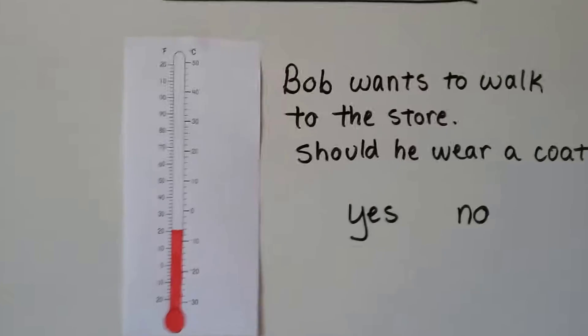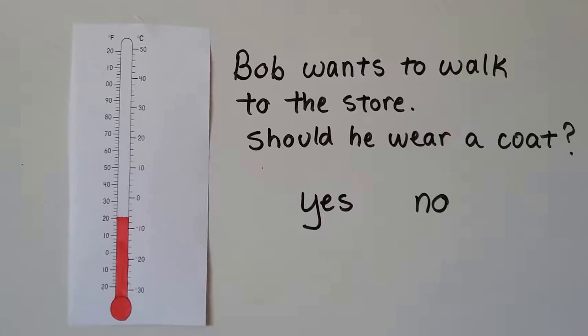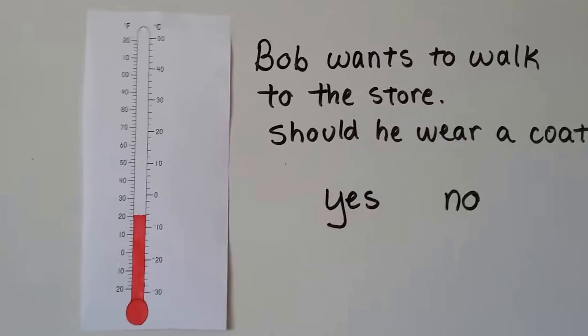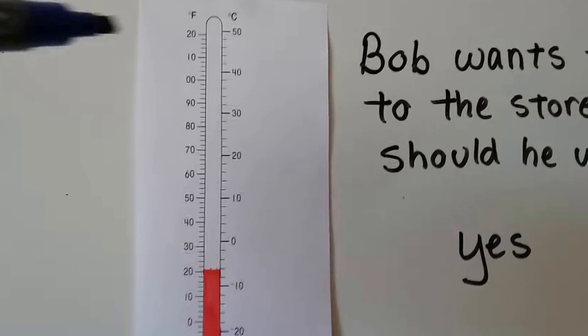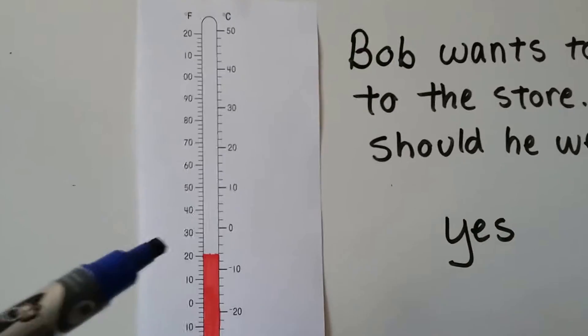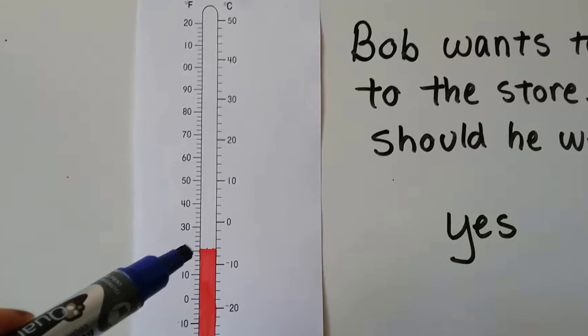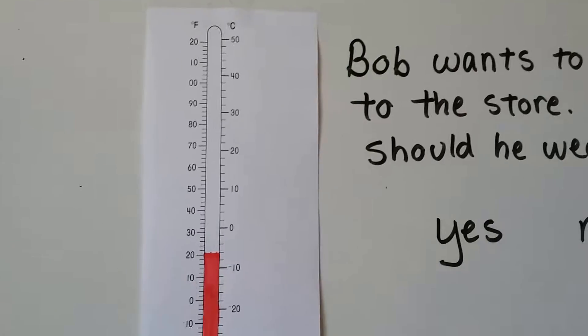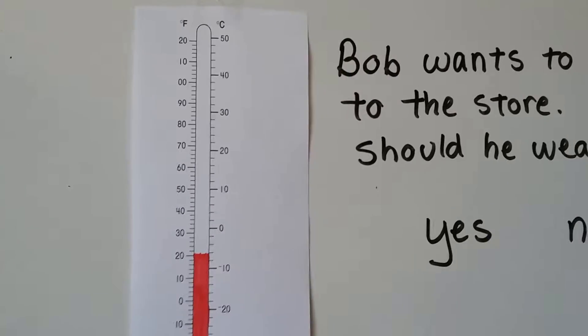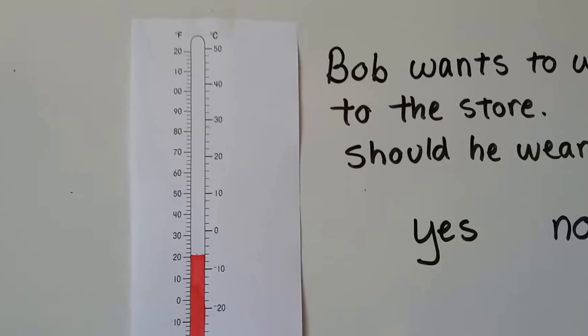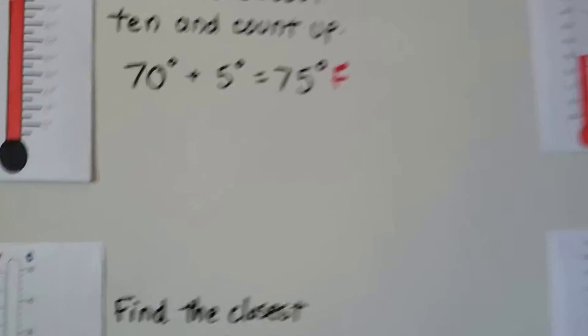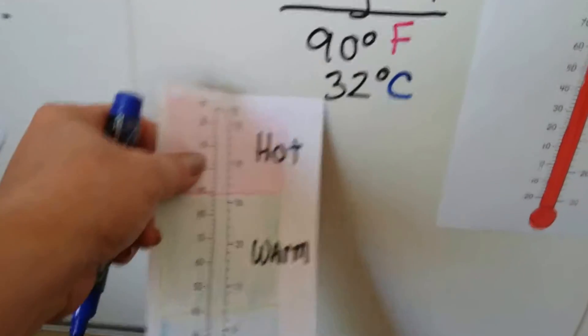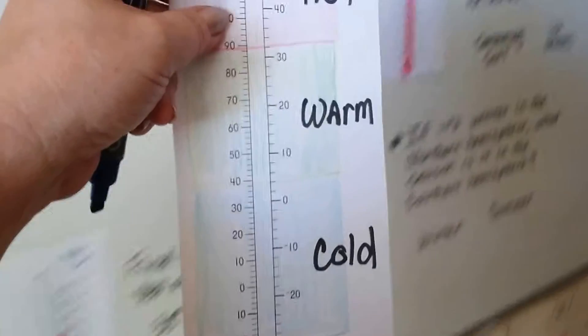So let's do some critical thinking. Bob wants to walk to the store. Should he wear a coat? Well, we need to look at the temperature outside to figure out if Bob should wear a coat. So here's Fahrenheit, and here's Celsius. It says it's 20 degrees Fahrenheit. If it's 20 degrees outside, should Bob wear a coat? Well, let's peek at our chart over here. Let's bring this over with us.